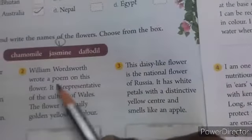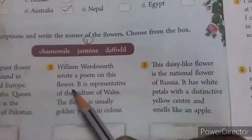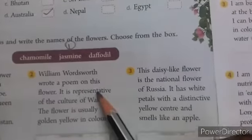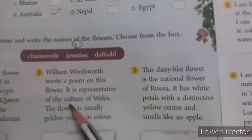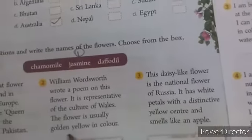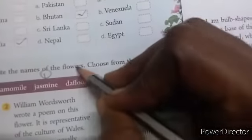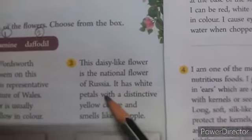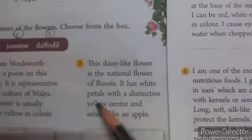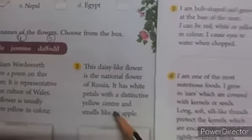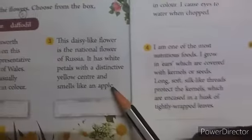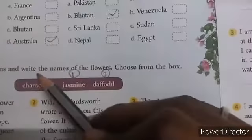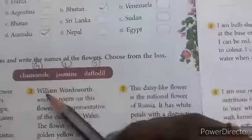Second one: William Wordsworth wrote a poem on this flower. It is representative of the culture of Wales. The flower is usually golden yellow in colour. The answer is Daffodil. Third one: the daisy-like flower is the national flower of Russia. It has white petals with a distinctive yellow centre and smells like an apple. The answer for that flower is Chamomile.